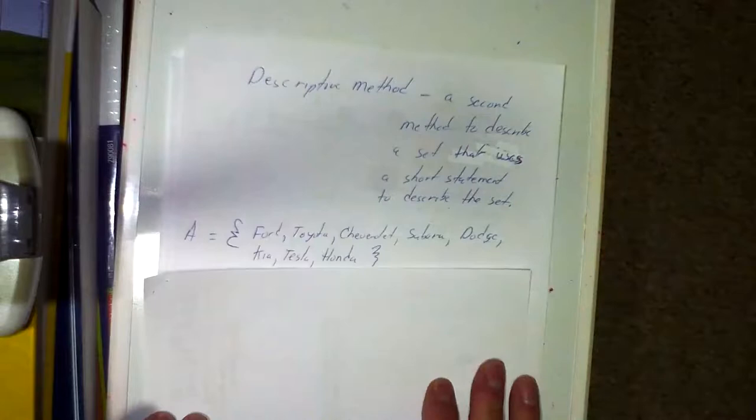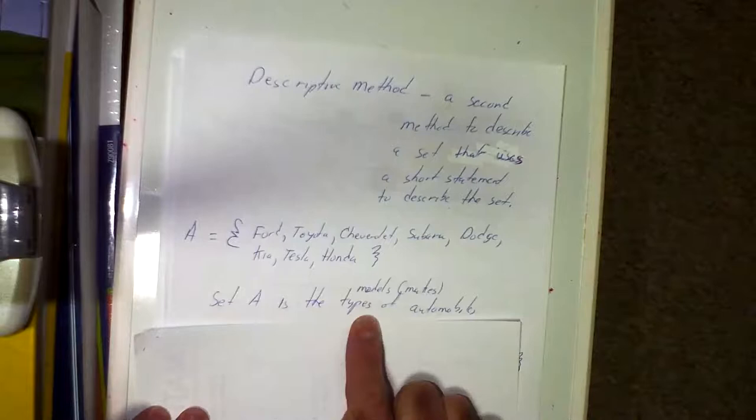Another method is called the descriptive method — the second method for describing a set. It uses a short sentence or statement to describe the set. For example, set A equals {Ford, Toyota, Chevrolet, Subaru, Dodge, Kia, Tesla, Honda}. The descriptive method would say: set A is the set of makes of automobiles. You're using words to describe what the roster method incorporates.